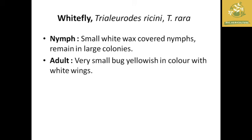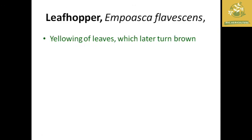Next is the whitefly, scientific name Trialeurodes ricini or Trialeurodes rara. The nymphs are small, with white waxy covering. The adult has small yellowish body with white wings. This is the whitefly identification for castor.